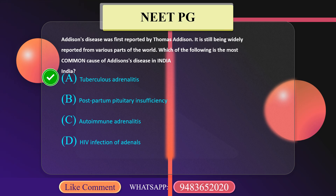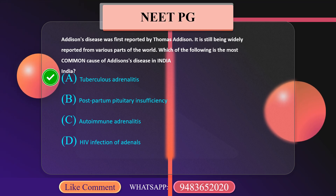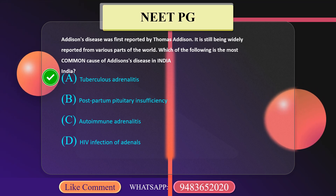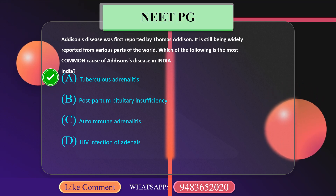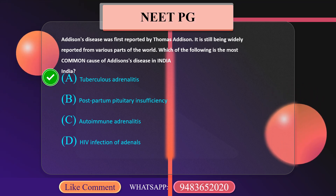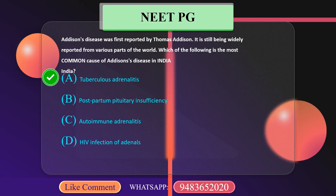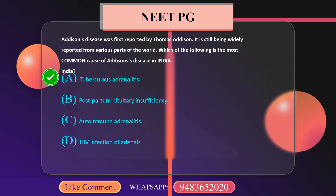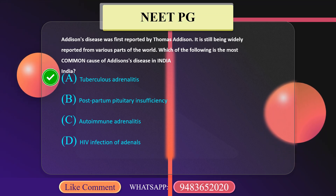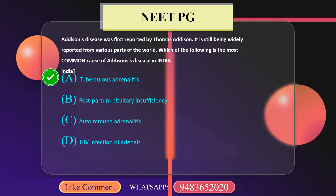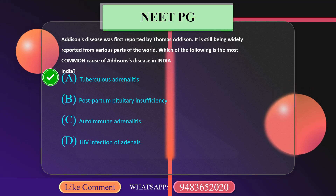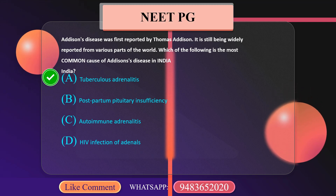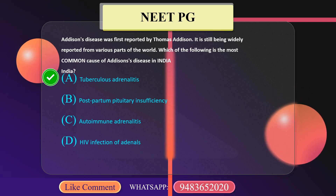The correct answer here is tubercular adrenalitis. Addison's disease was first reported by Thomas Addison and is still widely reported from various parts of the world. The most common cause of Addison's disease in India is tubercular adrenalitis.